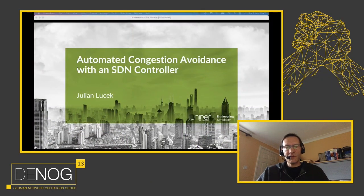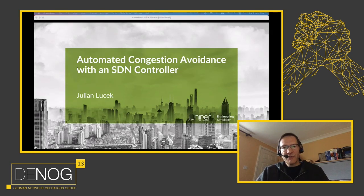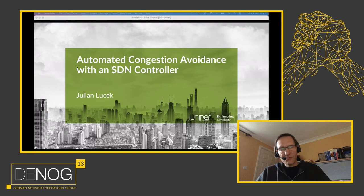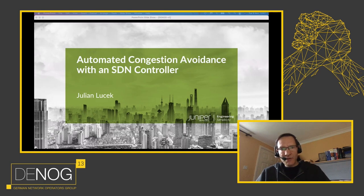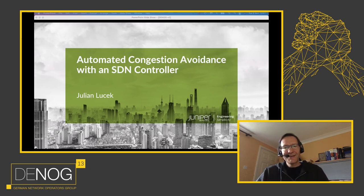The background behind this talk is that when it comes to traffic management in networks, people traditionally have done it very manually. They look at the traffic graphs — if a link is getting congested, they might tweak the IGP metrics to try to move traffic away, or they might put in some tactical traffic-engineered LSPs as a bypass for that congestion point. It's cumbersome, time-consuming, and error-prone.